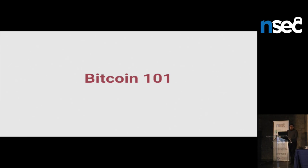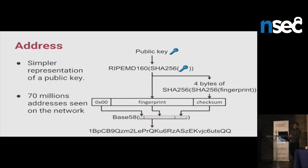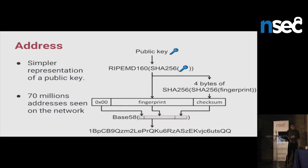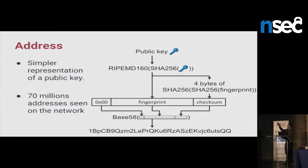Bitcoin 101. As I said, I'll take some shortcuts. First of all, an address is your identity on the network. It's based on the public key. Basically, you generate a public-private key pair, take your public key, hash it, encode it, and you get an address. That's a simpler representation of a public key. So far, I've seen 70 million addresses on the network.